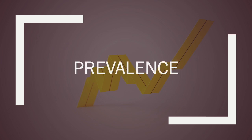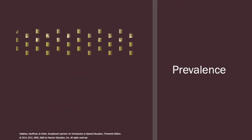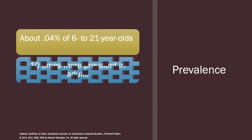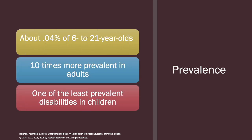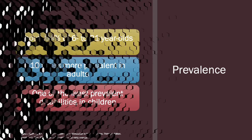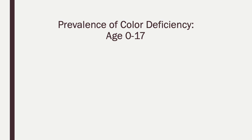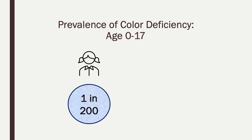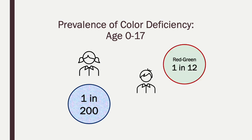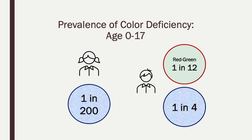Let's look at how often visual impairments occur. For children ages 6 to 21, only about 0.04% have a visual impairment, but this is 10 times more likely in adults — making visual impairments one of the least prevalent disabilities in children. For color deficiency, girls have about a 1 in 200 chance of having some sort of color deficiency, while boys have a 1 in 12 chance of a red-green deficiency and a 1 in 4 chance of any type of color deficiency.